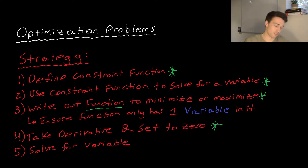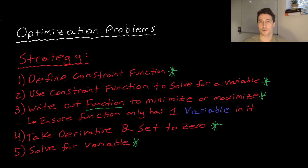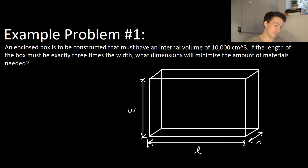Lastly, we're going to solve for the variable. This will allow us to find all the dimensions of the specific shape, or the number of price decreases, or things along those lines. All right, so now we're going to start with example problem number one.